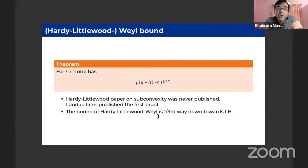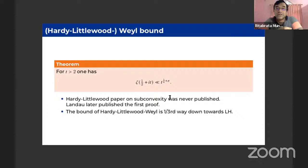If you believe in the Riemann hypothesis, it implies the Lindelöf hypothesis: that zeta of one-half plus iT is bounded by T to the power epsilon for any positive epsilon, with no one-quarter exponent. The subconvexity problem is about trying to improve this exponent — to reduce from one-quarter to something smaller, ideally reaching Lindelöf. The Hardy-Littlewood announcement was about the subconvexity bound T to the power one-sixth plus epsilon. One-sixth is smaller than one-quarter — it is one-third of the way down towards the Lindelöf hypothesis.